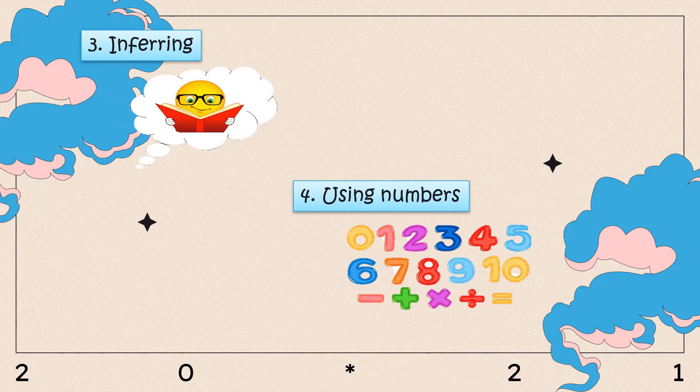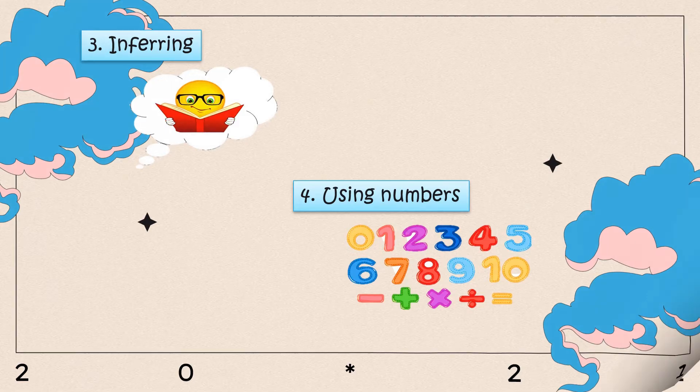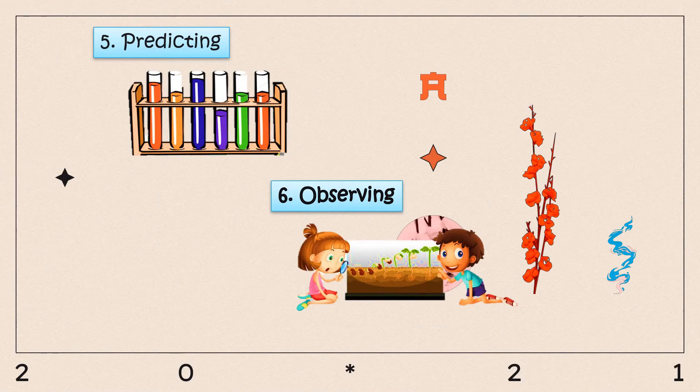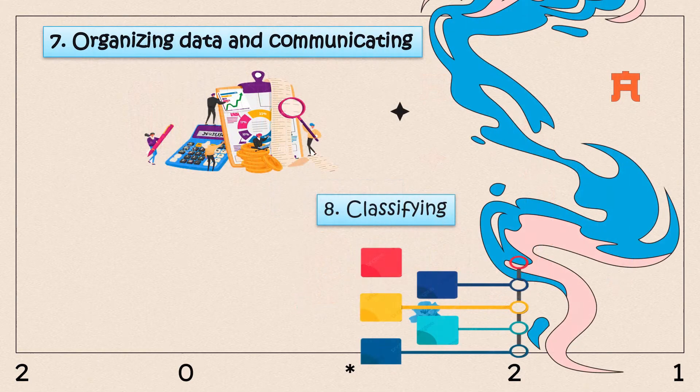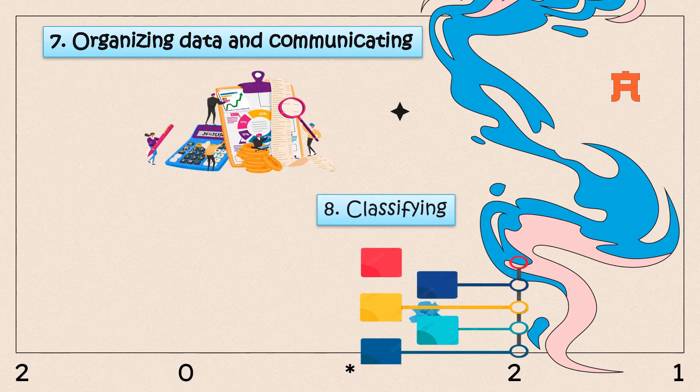Okay, now let's move to the eight basic science process skills. Number one: using space-time relationship. Number two: measuring. Number three: inferring. Number four: using numbers.